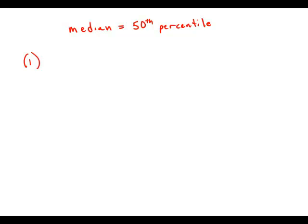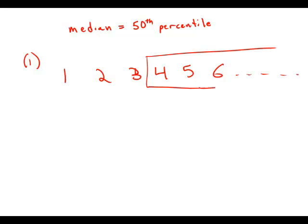So statement number one tells us that 25 percent of the projects at company Z have four or more employees. So let's just consider the number of employees on a project, and we don't know of course how far this goes up, but 25 percent of them, the upper 25 percent, have four or more. So it means this line right here is the 75th percentile, and so somewhere below it is the 50th percentile.